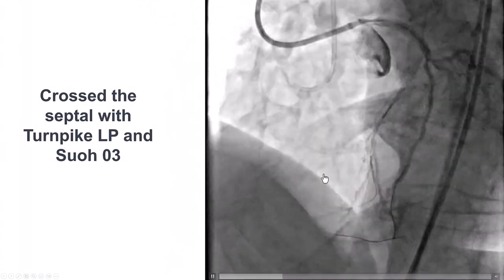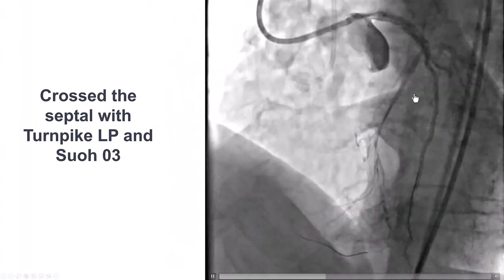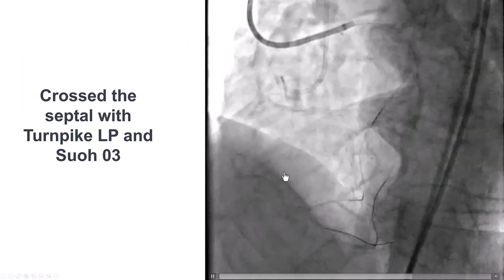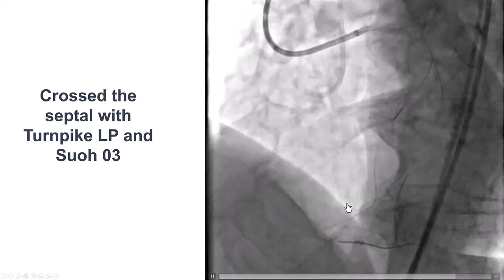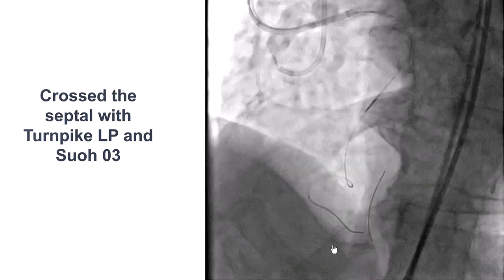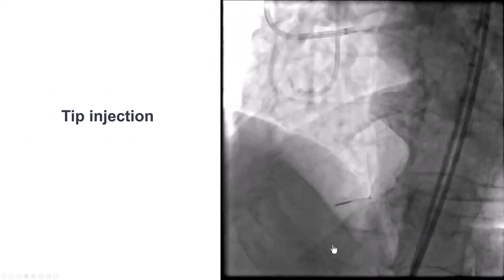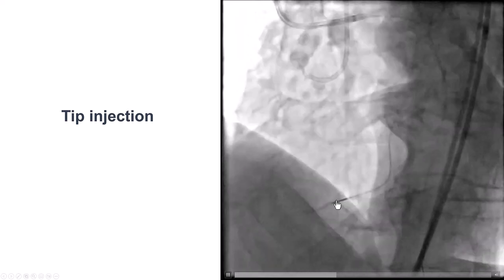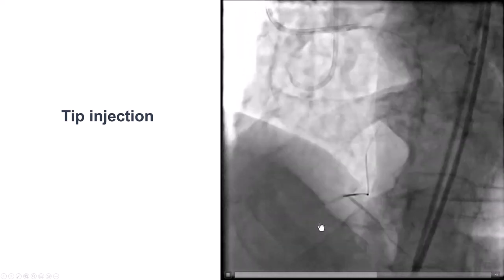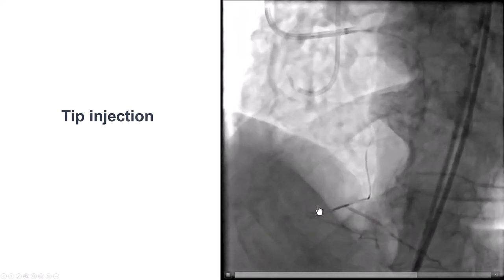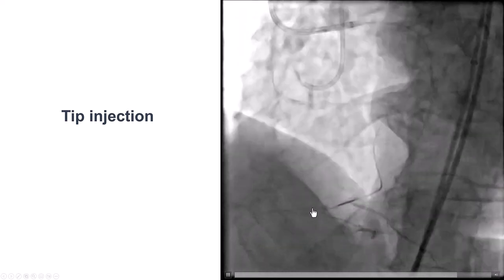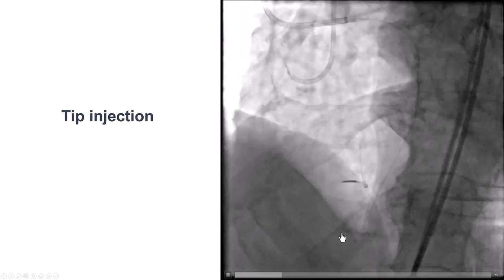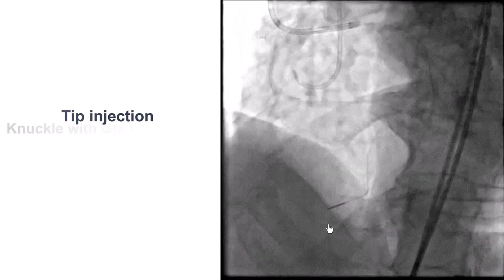We did start trying to cross the septal, and we were successful using a Turnpike LP and a SUO 3 guidewire. We then delivered the Turnpike LP and did a tip injection, showing that indeed the CTO goes all the way to the distal PDA and PLV bifurcation.